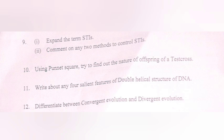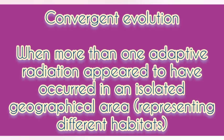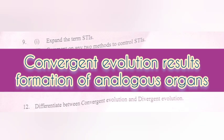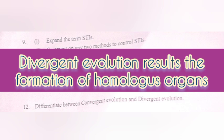Question 12. Differentiate between convergent evolution and divergent evolution. Answer: Convergent evolution — when more than one adaptive radiation appears to have occurred in an isolated geographical area or representing different habitats. Divergent evolution — a process that occurs when groups of organisms from the same ancestor evolve and develop differences, resulting in the formation of new species. Convergent evolution results in the formation of analogous organs; divergent evolution results in the formation of homologous organs.